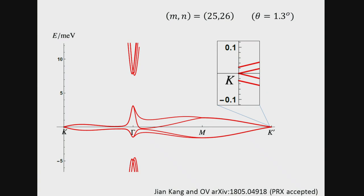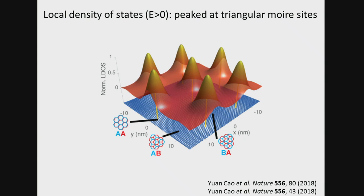We now have a setup to build Wannier states: a gap separates our four bands from the top and bottom, so in principle we can construct exponentially localized Wannier states. If you compute the local density of states from the Bloch states for positive energy, you find it is peaked at Moiré triangle lattice sites. This naively suggests Wannier states should be centered on the triangle lattice — perhaps a triangular lattice Hubbard model. I will argue this is in fact incorrect.